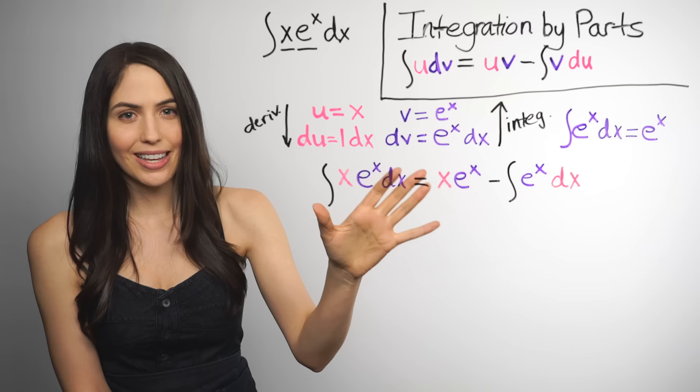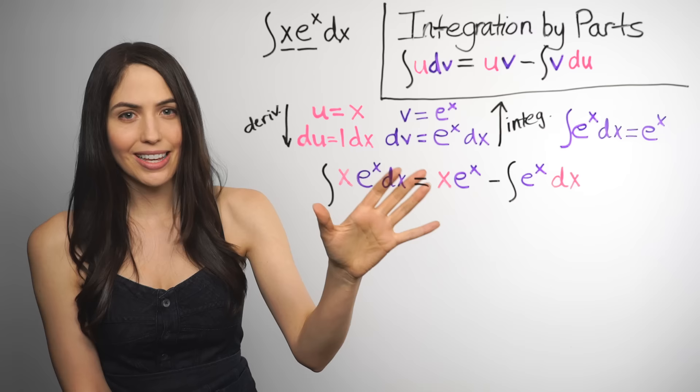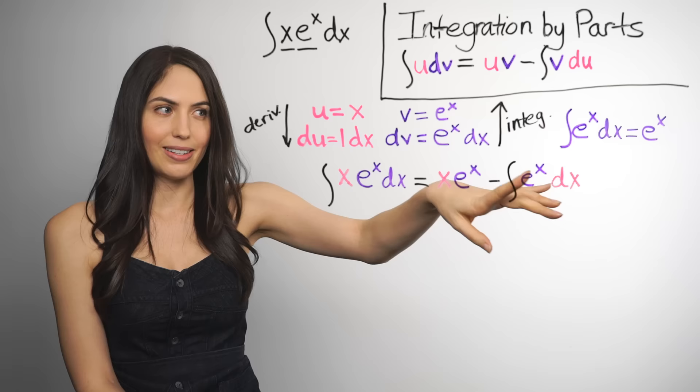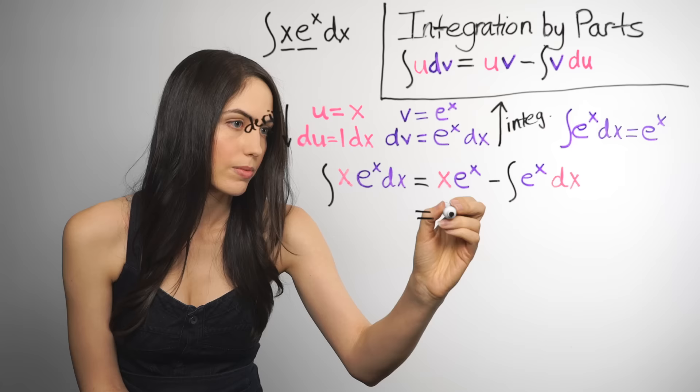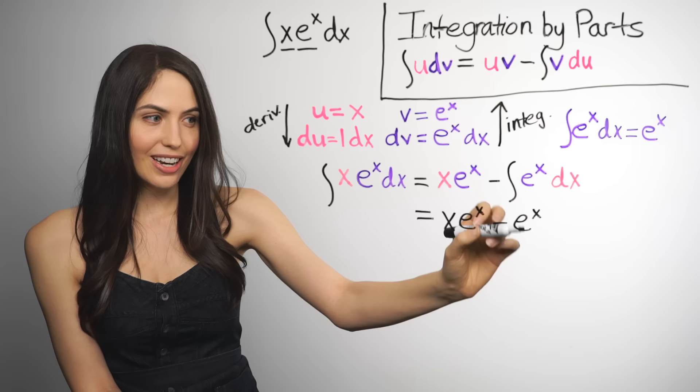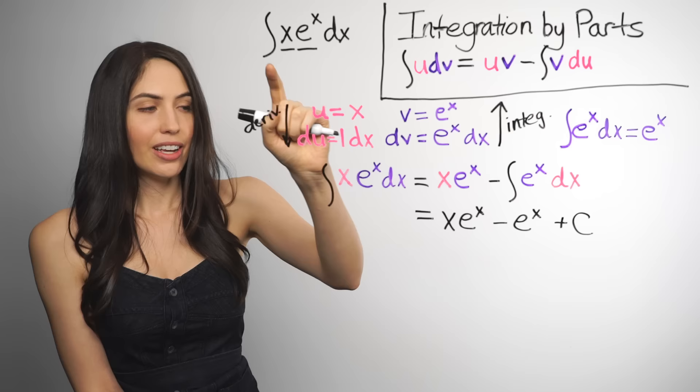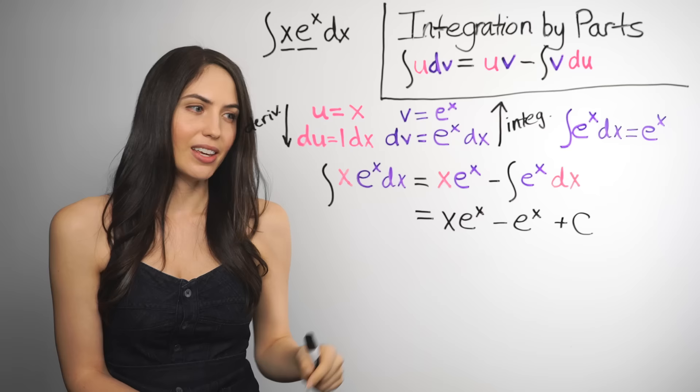Okay, so we've used the formula. I know this looks like it got more complicated, but it's going to work out and we're almost done. Because this integral is something that we know how to do. This is an integration rule. The integral of e to the x is e to the x. So this is what we have when we integrate that. And at the very end, don't forget to add a plus c. This is an indefinite integral. It has no limits here. So you do need to add in the constant of integration at the end. Don't forget the plus c. So this is our answer for this integral.